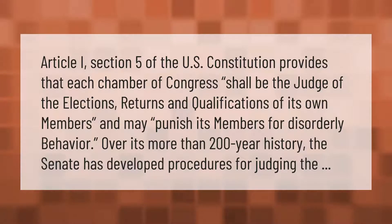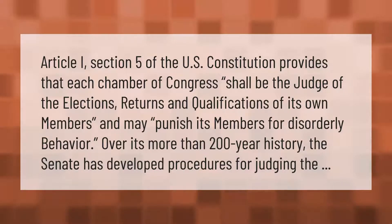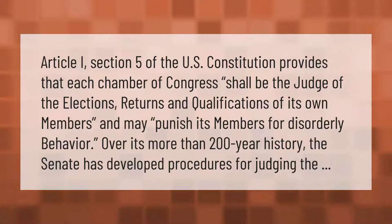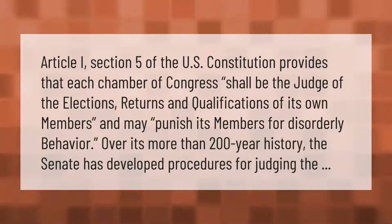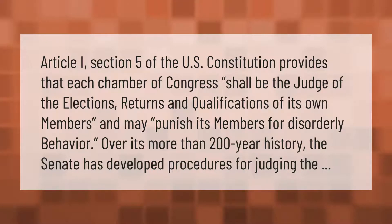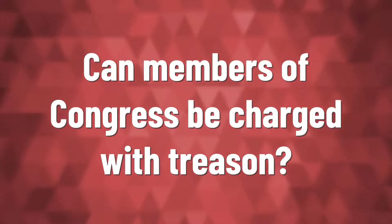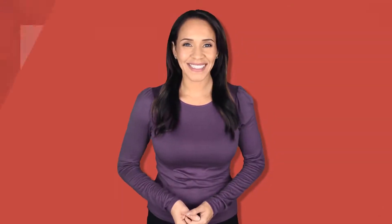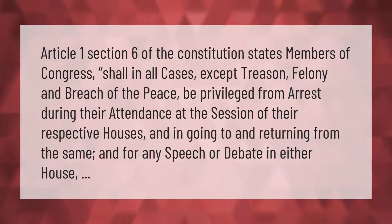Article 1, Section 5 of the U.S. Constitution provides that each chamber of Congress shall be the judge of the elections, returns, and qualifications of its own members, and may punish its members for disorderly behavior. Over its more than 200-year history, the Senate has developed procedures for judging these matters.